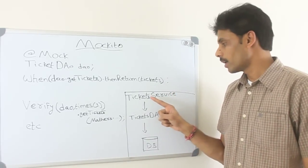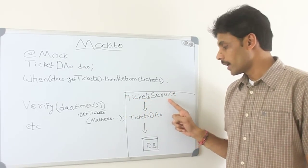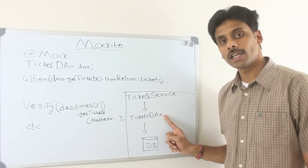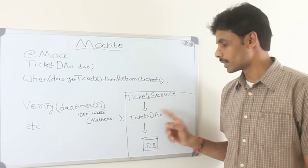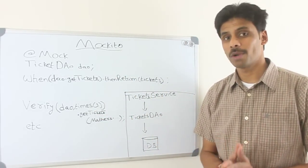So then, from that point in time, when our unit test calls the ticket service, it will not hit the real ticketing DAO, which goes against the database. It's all mocked out for us. As simple as that.